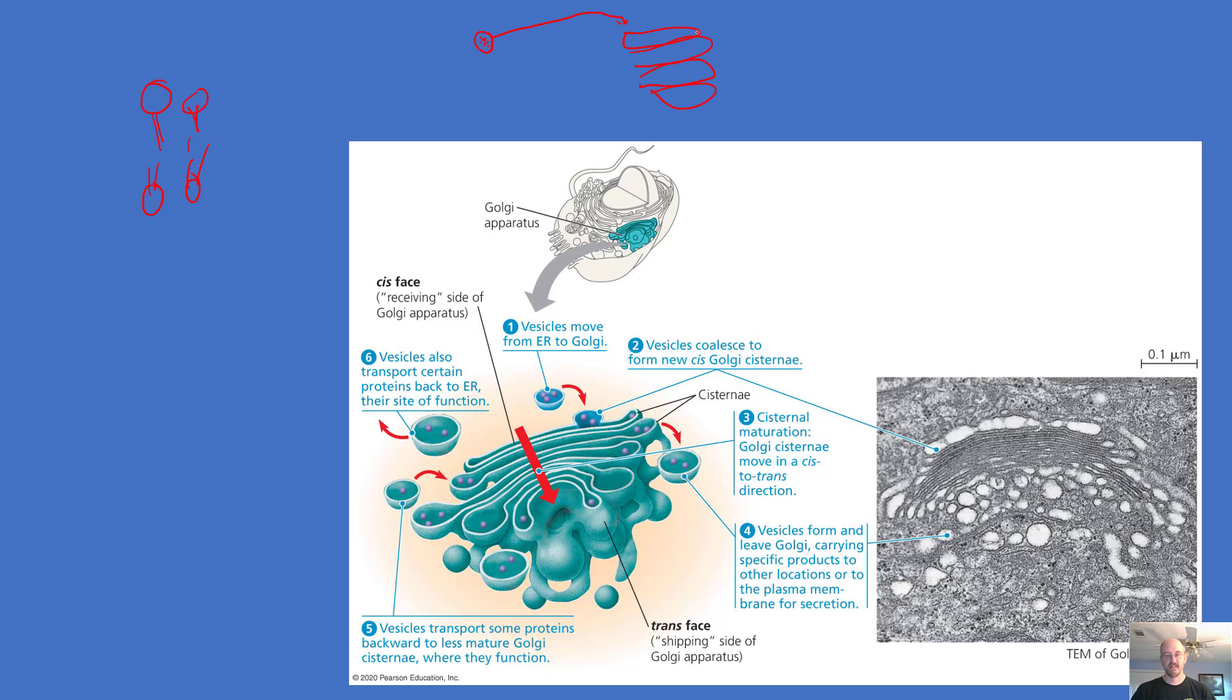Now there are two sides to these flattened sacs. The side that receives items is called the cis face, and the side where they ship out is called the trans face, as you can see down here, the shipping side.